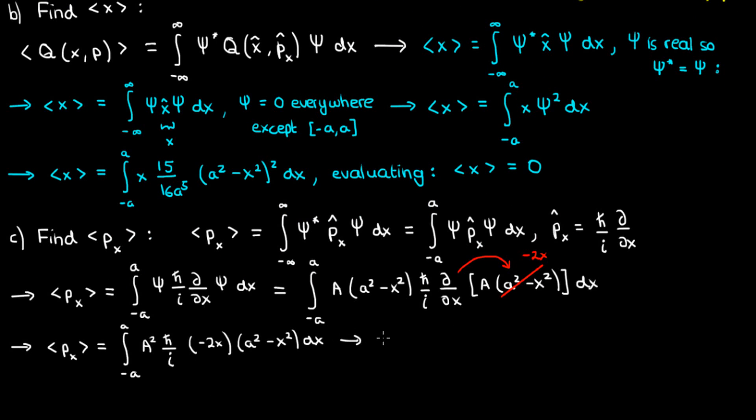so this is what we end up with for the integral. Again, I'll leave you to show that ⟨pₓ⟩ = 0. This makes sense since, once again, we're integrating an odd function over an interval symmetric around 0.